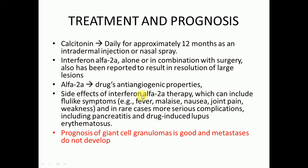The side effects of interferon alpha-2a therapy should be considered, which can include flu-like symptoms such as fever, malaise, nausea, joint pain, and weakness, and in rare cases more serious complications including pancreatitis and drug-induced lupus erythematosus. Therefore, we should reserve the usage of interferon alpha-2a and prefer other modalities for treatment and management of central giant cell granuloma. The prognosis of central giant cell granuloma is very good, and metastasis does not develop.